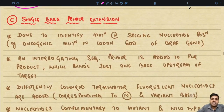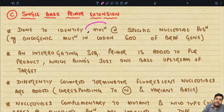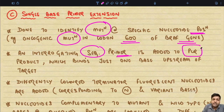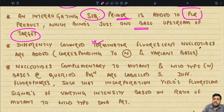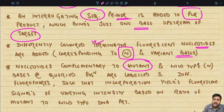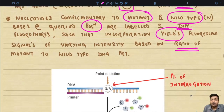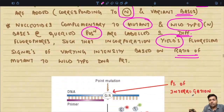Single base primer extension is used to identify mutations at a specific nucleotide position — detecting a specific point mutation, for example an oncogenic mutation in codon 600 of the BRAF gene. An interrogating sequencing primer is added to the PCR product, binding just one base upstream of the target. Differently colored terminator fluorescent nucleotides corresponding to the normal and variant bases are then added. Incorporation yields fluorescent signals of varying intensity based on the ratio of mutant to wild-type DNA present.